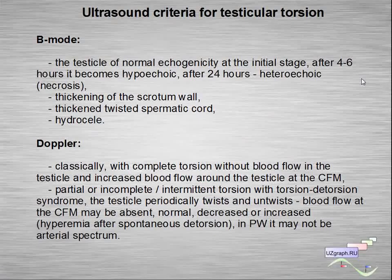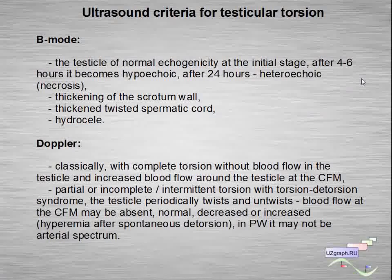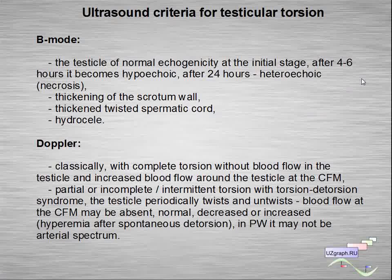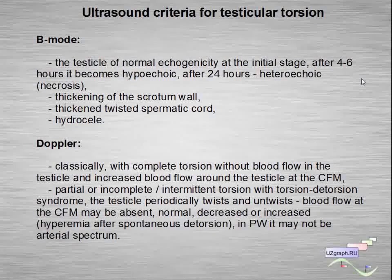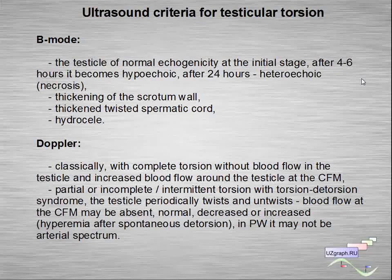Ultrasound criteria for testicular torsion — B-mode grayscale criteria: the testicle is of normal echogenicity at the initial stage; after 4-6 hours it becomes hypoechoic; after 24 hours it becomes hypoechoic with fibrosis. Additional findings include thickening of the scrotal wall, thickening of the spermatic cord, and hydrocele. Doppler criteria: classically with complete torsion there is absent blood flow in the testicle and increased blood flow around the testicle in color flow mode. For partial and intermittent torsion with torsion-detorsion syndrome, the testicle periodically twists and untwists, so blood flow can be any variant — absent, normal, decreased, or increased with hyperemia after spontaneous detorsion. In pulse wave Doppler, arterial spectrum may not be registered.